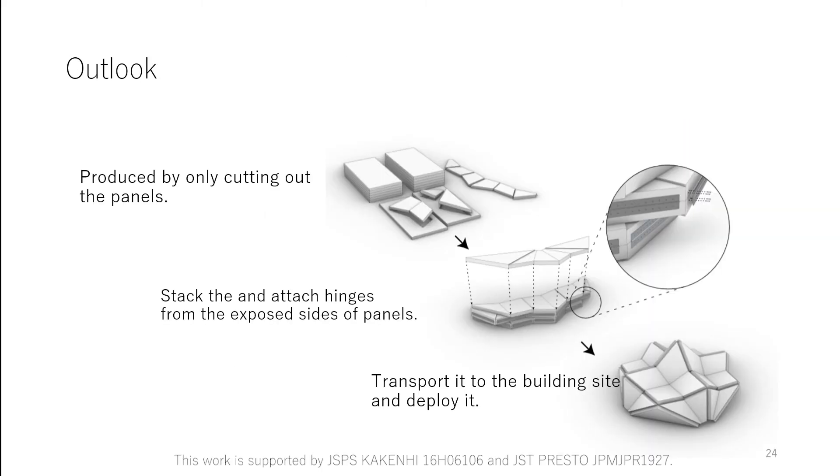Our method has an advantage for architectural fabrication. Because each panel has a constant thickness, it can be produced by only cutting out the panels using a through-axis CNC or laser cutter. The property that the structure folds completely flat is also useful for the assembly of panels. In the assembly process, we can stack the panels in its flat-folded state and attach hinges from the exposed sides of panels. Once we obtain the flat-folded shape with every architectural component prefabricated, we can transport it to the building site and deploy it.